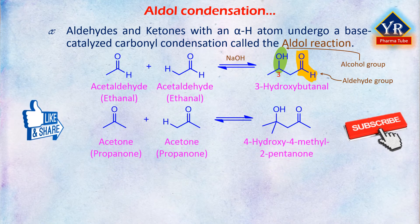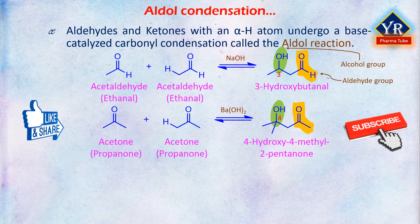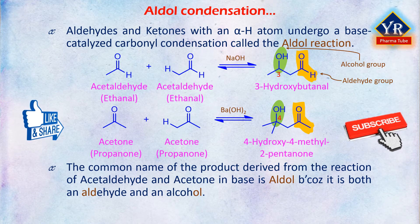Another example: two molecules of acetone (that is, propanone) in the presence of barium hydroxide produce 4-hydroxy-4-methyl-2-pentanone, which is a beta-hydroxyketone. The common name of the product derived from the reaction of aldehyde and acetone in base is aldol because it is both an aldehyde and an alcohol. Aldol is also the generic name given to any product formed in this type of reaction.